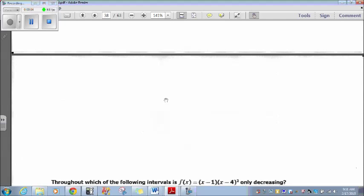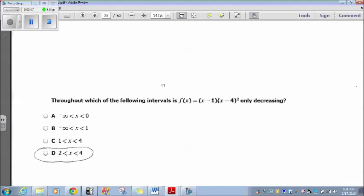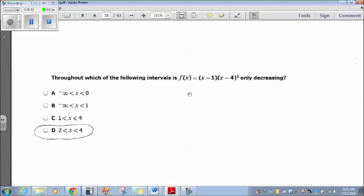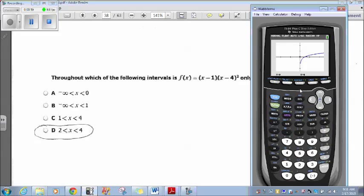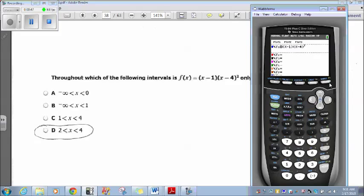We're just moving through this thing here. Which of the following intervals is f of x equals x minus 1 times x minus 4 squared only decreasing? Graph it. First, let me put this back to normal. Then, let me go over to my y1. Clear out what's in there. Now, I'm going to put in x minus 1 times x minus 4 squared.